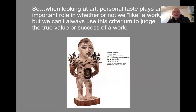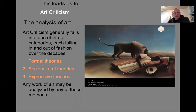When looking at art, personal taste plays an important role in whether or not you like a work of art, but we can't always use this criterion to judge the true value or success of a work. This leads us to art criticism — the analysis of art — which generally falls into three categories: formal theories, sociocultural theories, and expressive theories of art criticism.